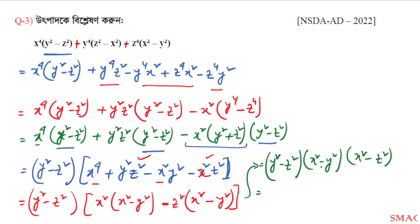Finally, simplifying all grouped terms: (x² − y²) and (x² − z²) and (y² − z²) factors emerge. The last factor (y² − z²) can be written as (y + z)(y − z). Therefore the fully factored solution is: (x² − y²)(x² − z²)(y² − z²), which equals (x+y)(x−y)(x+z)(x−z)(y+z)(y−z). This is the complete solution to question 3.